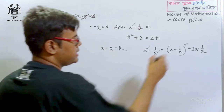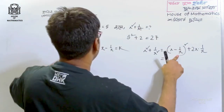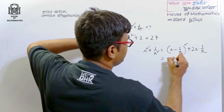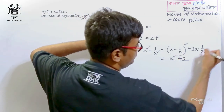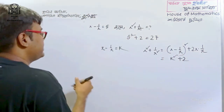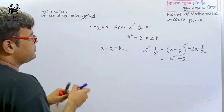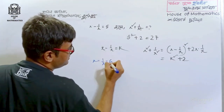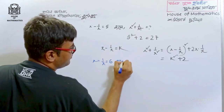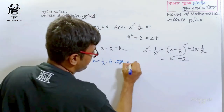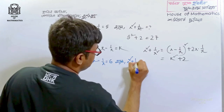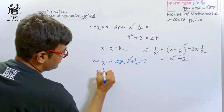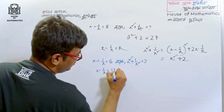This is how we know: x minus 1 by x is equal to k, so k squared plus 2 into x. That means x minus 1 by x is equal to 6. x squared plus 1 by x squared is equal to 12. So the formula applies.